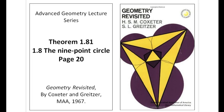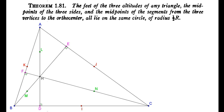Hello everyone, welcome to a new advanced geometry lecture. We will have a look at theorem 1.81 in section 1.8, page 20 from 'Geometry Revisited' by Coxeter and Greitzer. The theorem is about the nine-point circle. Here is the statement and a simple view of this celebrated theorem.